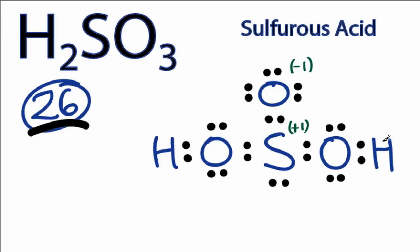When we calculate the formal charges, the sulfur has a plus 1 charge, and the oxygen has a minus 1 charge. So we'd like our formal charges to be as close to 0 as possible.